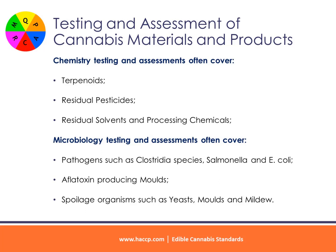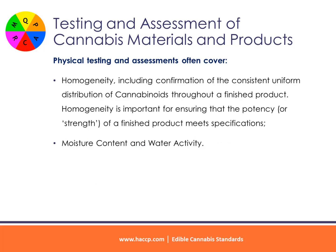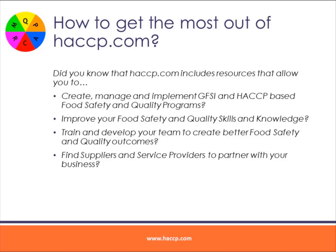Microbiology testing and assessments often cover pathogens such as Clostridia species, Salmonella, and E. coli, aflatoxin-producing molds, and spoilage organisms such as yeasts, molds, and mildew. Physical testing and assessments often cover homogeneity — including confirmation of the consistent uniform distribution of cannabinoids throughout a finished product — as homogeneity is important for ensuring that the potency or strength of a finished product meets specifications, as well as moisture content and water activity.